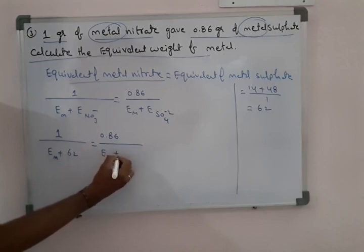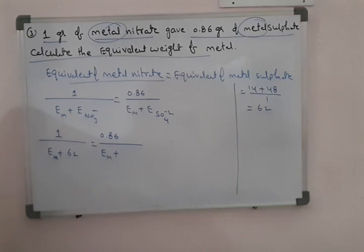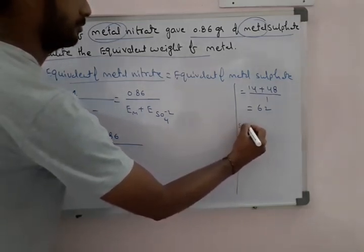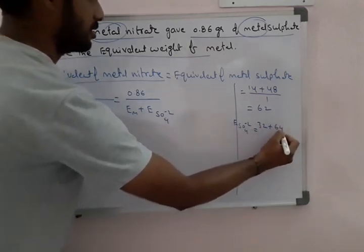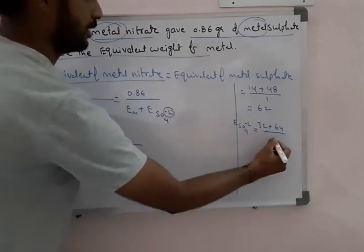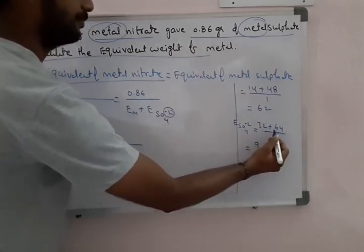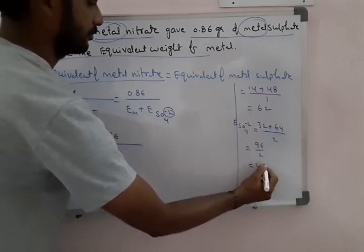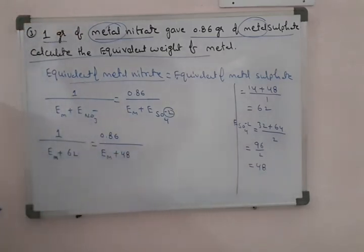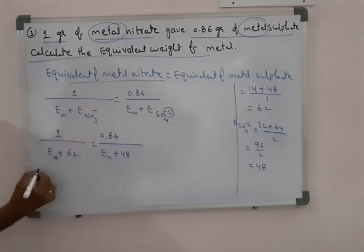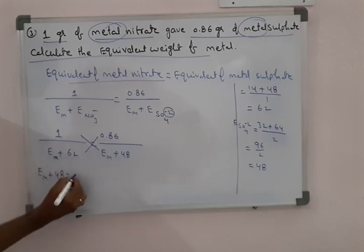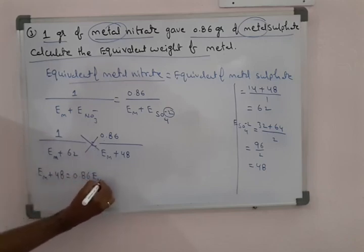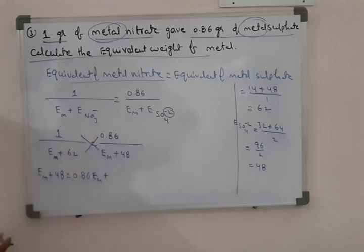We need to calculate the equivalent weight of sulphate. For sulphate, the atomic weight of sulfur is 32 and oxygen contributes 64, giving a total formula weight of 96. The charge on sulphate is 2, so the equivalent weight of sulphate is 96 divided by 2 equals 48. By cross multiplication, equivalent weight of metal plus 48 equals 0.86 into 62, which gives approximately 53.32.